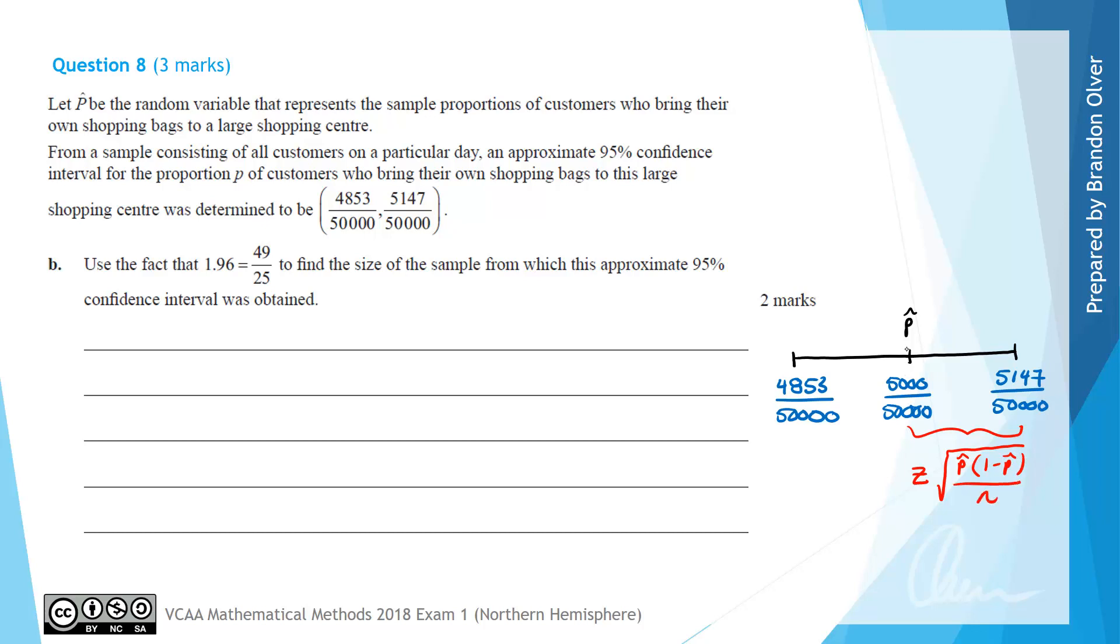By inspecting the numbers on this interval, we can see that half the width is simply 147 divided by 50000.